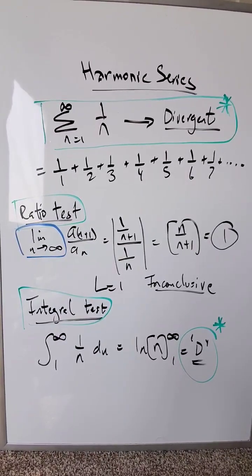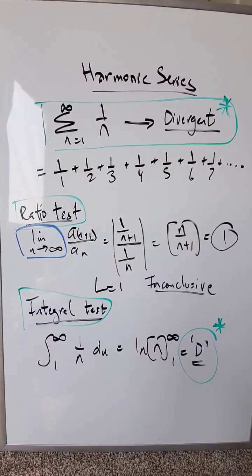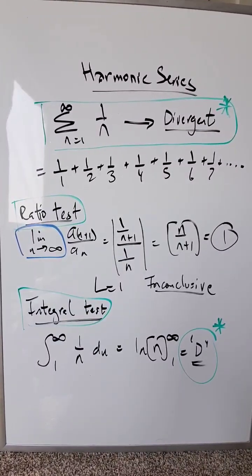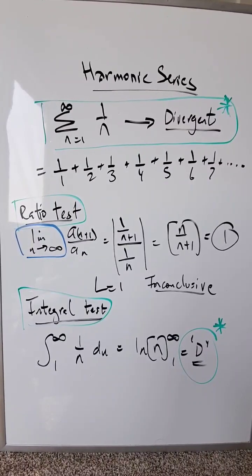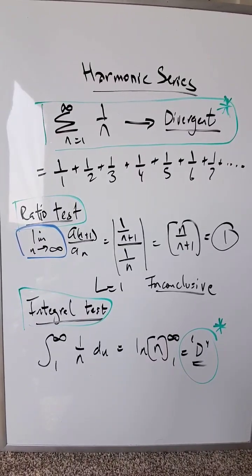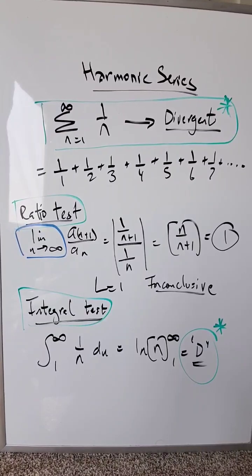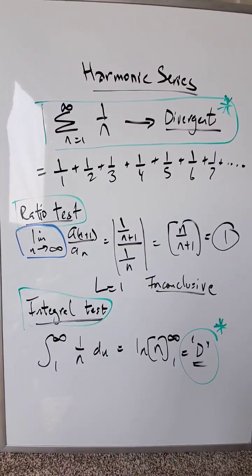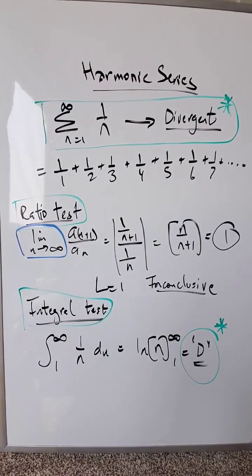Therefore, you look towards another test for this evaluation of convergence and or divergence. The integral test is a very good test. Just represent that series with regards to an integral procedure, and you have an end result of divergence, which tells you in general that the harmonic series is a divergent series.